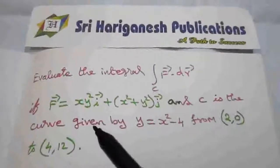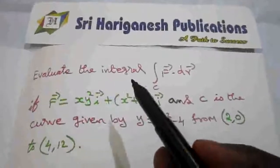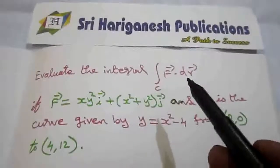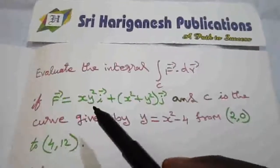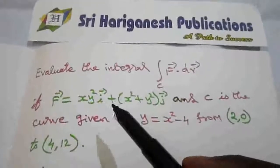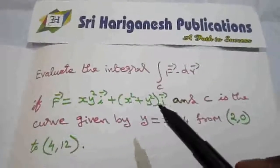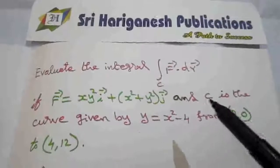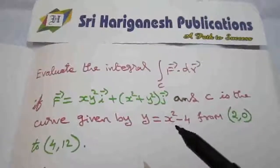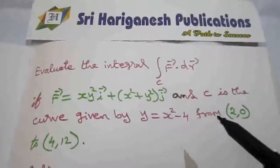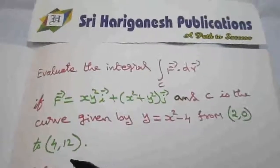So the first problem: Evaluate the integral over c, f dot dr, if f vector is equal to xy² i vector plus (x² + y²) j vector, and c is a curve given by y = x² - 4 from (2,0) to (4,12).